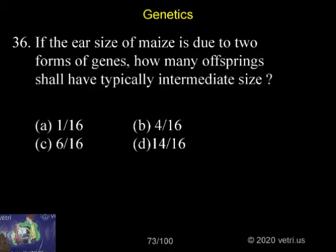If the ear size of the maize, it is a multiple factor inheritance, but it is controlled by 16 genes, not three genes or two genes.